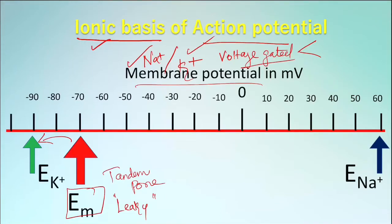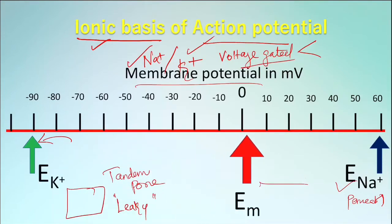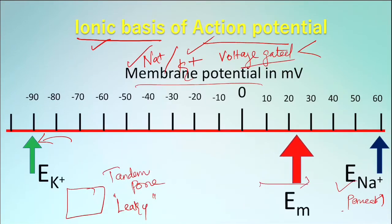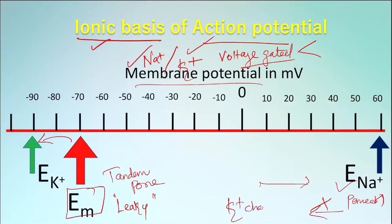During the depolarization phase of an action potential, the sodium ion permeability increases many folds and the membrane potential becomes positive. The inactivation of the sodium channel and the opening of voltage-gated potassium channels, which increases the permeability of potassium, results in repolarization.